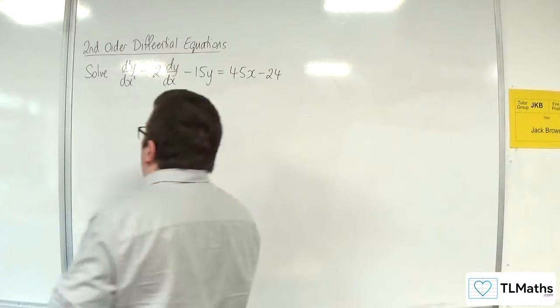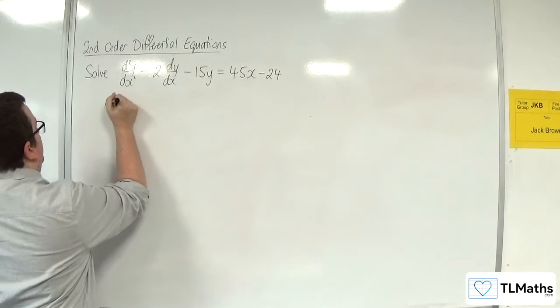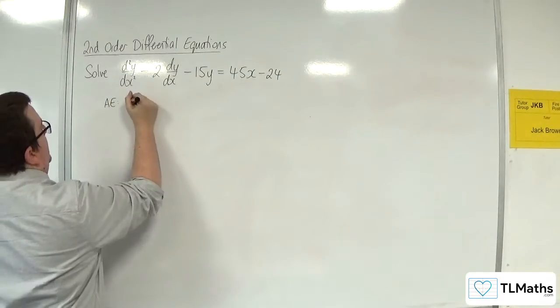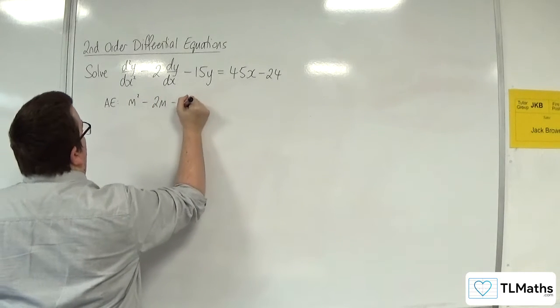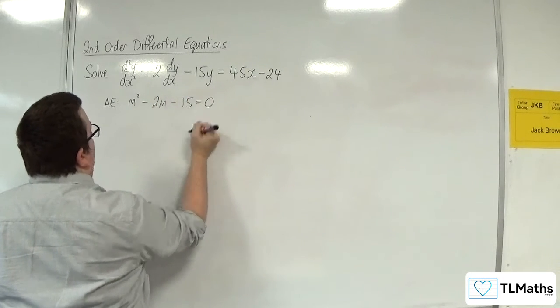So the first thing I want to do is write down the auxiliary equation, which will be m² - 2m - 15 = 0.